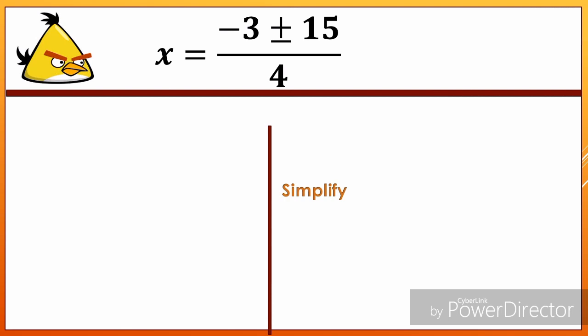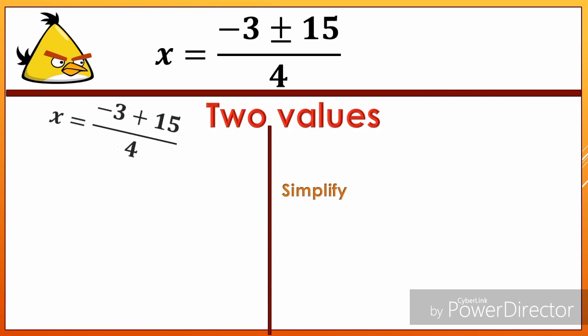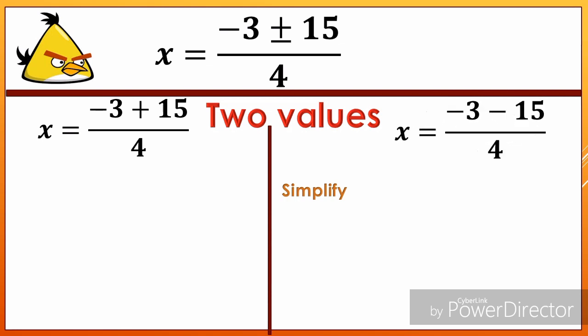There will be two solutions. The first one: x equals negative 3 plus 15, all over 4. Simplifying: negative 3 plus 15 is positive 12, all over 4. So 12 divided by 4 gives x equals 3. That is the first value of the equation.